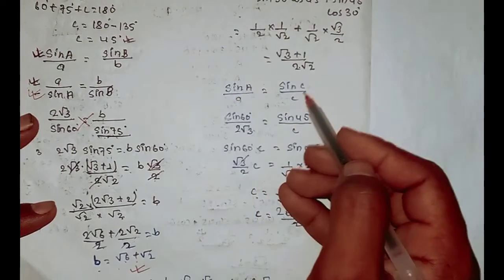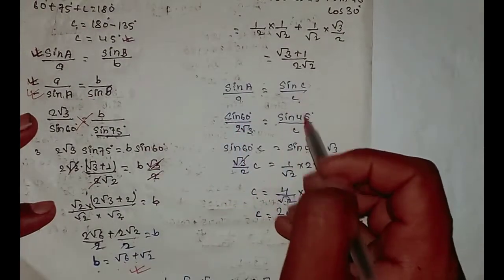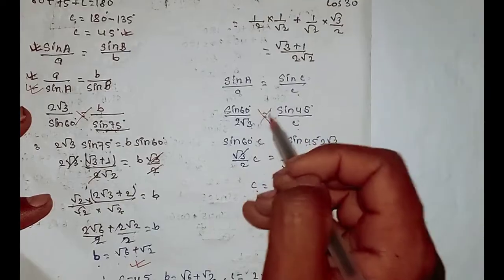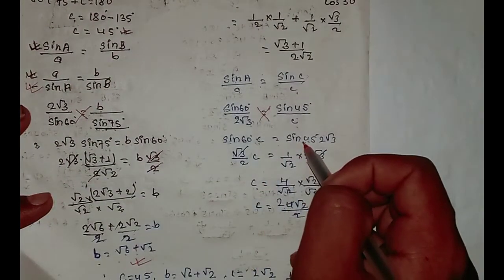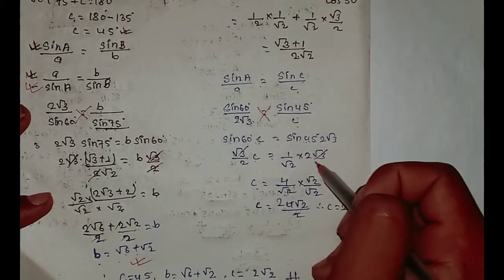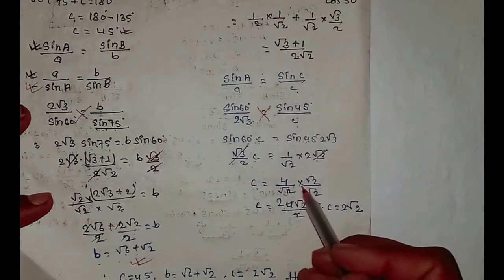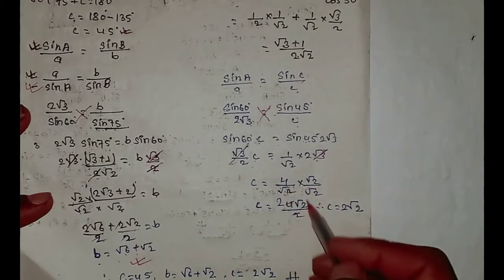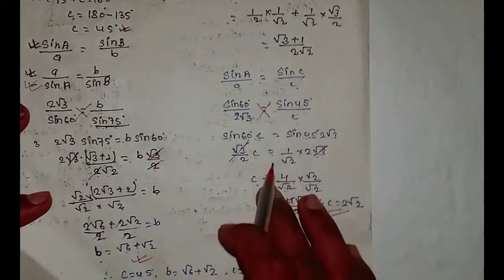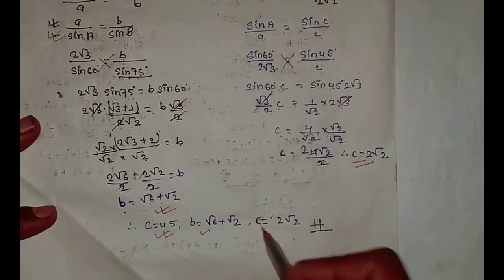For side c, using sin A over a equals sin C over c: sin 60 divided by 2 root over 3 equals sin 45 divided by c. Cross multiplying: c times sin 60 equals sin 45 times 2 root over 3. Sin 60 is root over 3 by 2, sin 45 is 1 over root 2. Root over 3 cancels out and simplifying gives c equals root over 2. So c equals 2 root over 2.